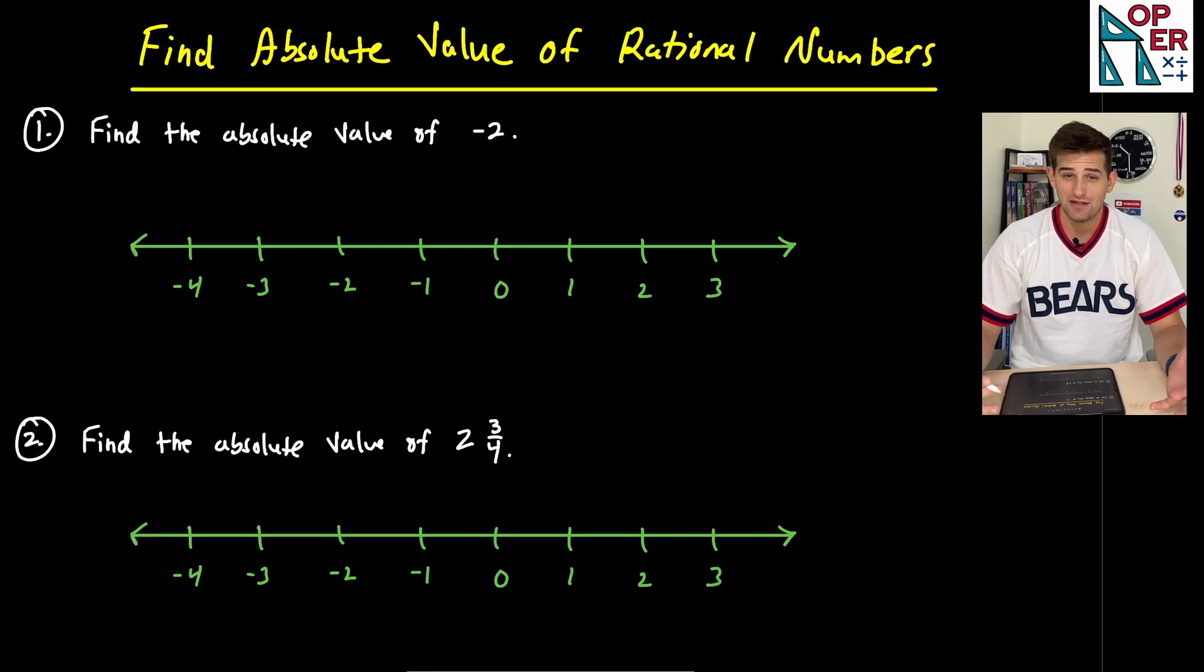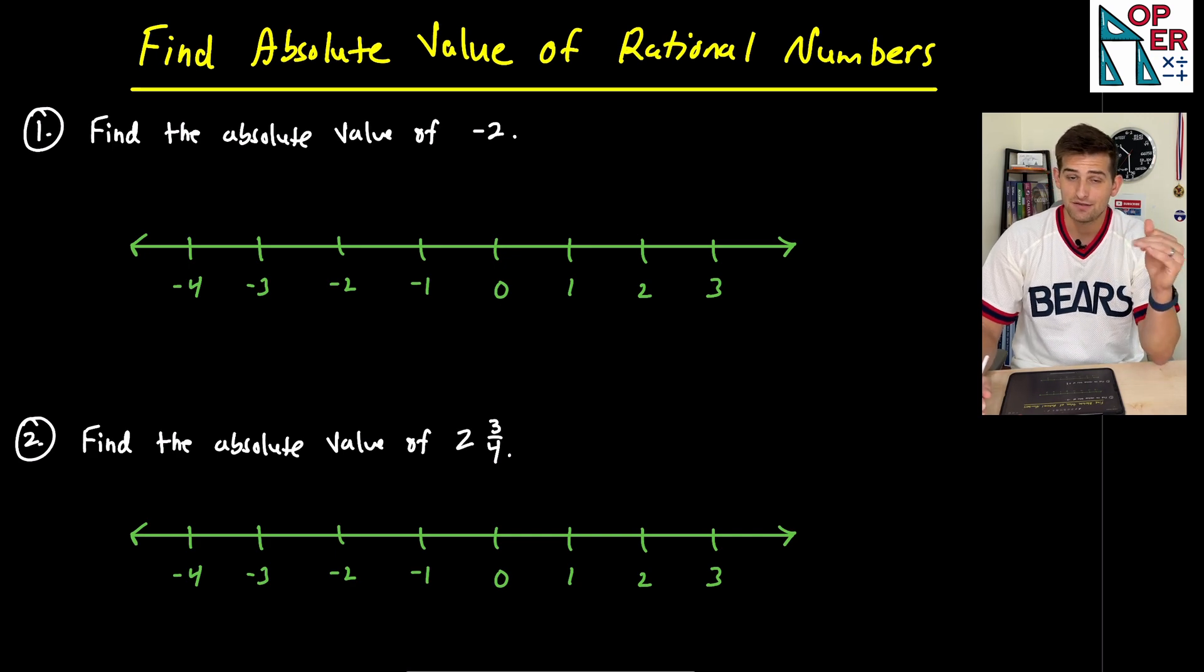Hello, everyone. In this video, we're going to talk about how we can find the absolute value of a rational number. Before we find absolute value, we got to know what absolute value is. Well, absolute value just represents the distance that a number is on a number line from zero.